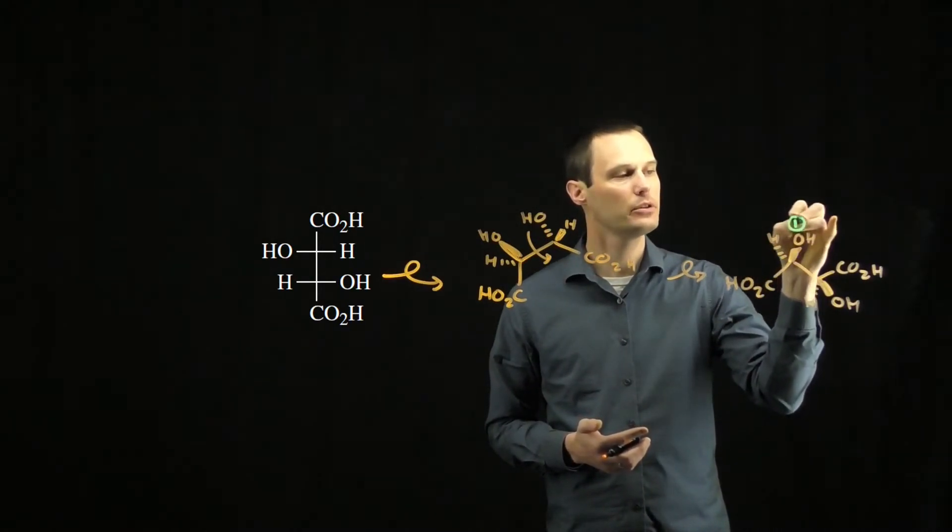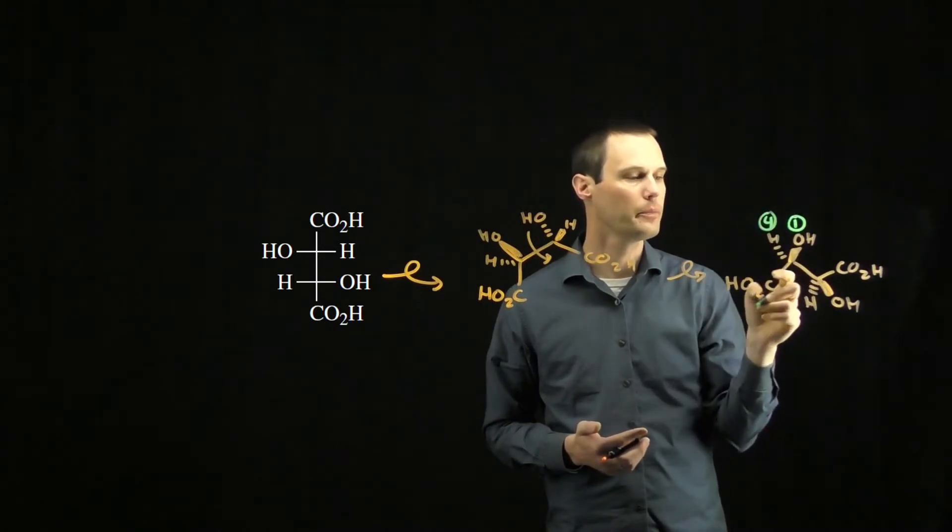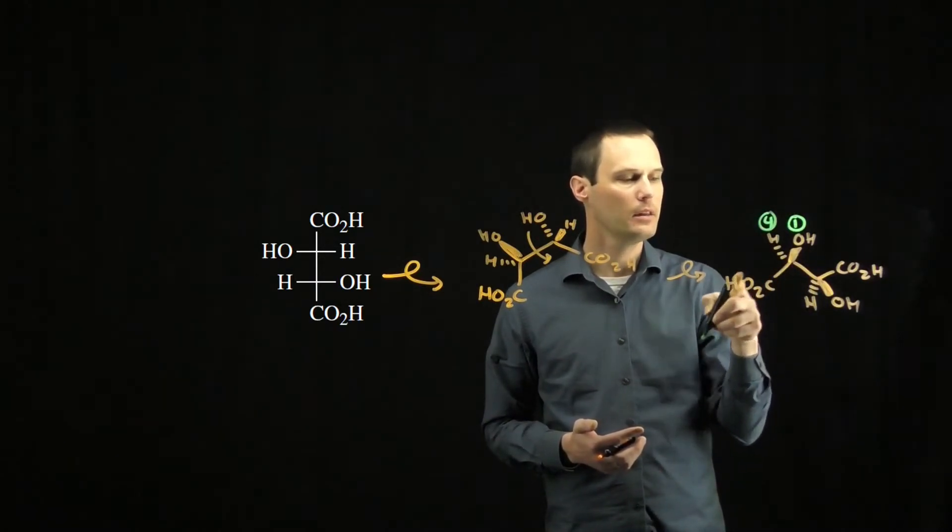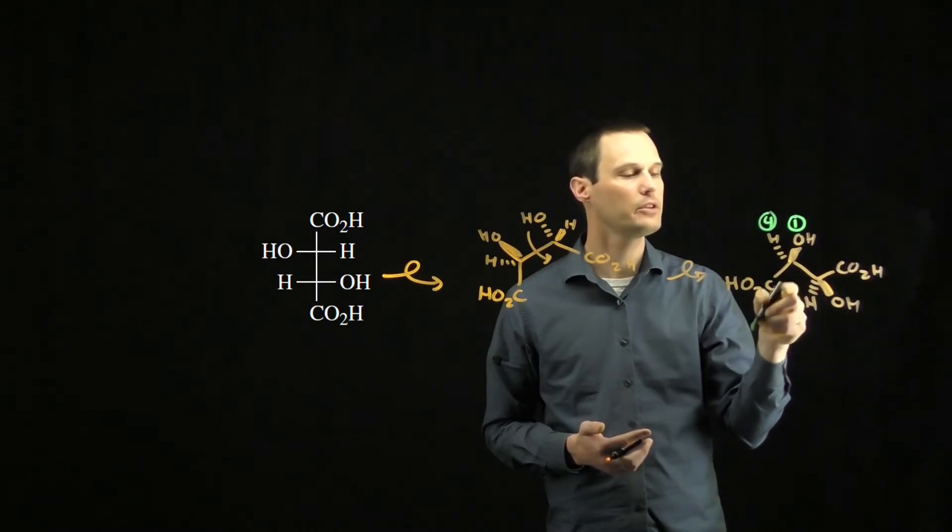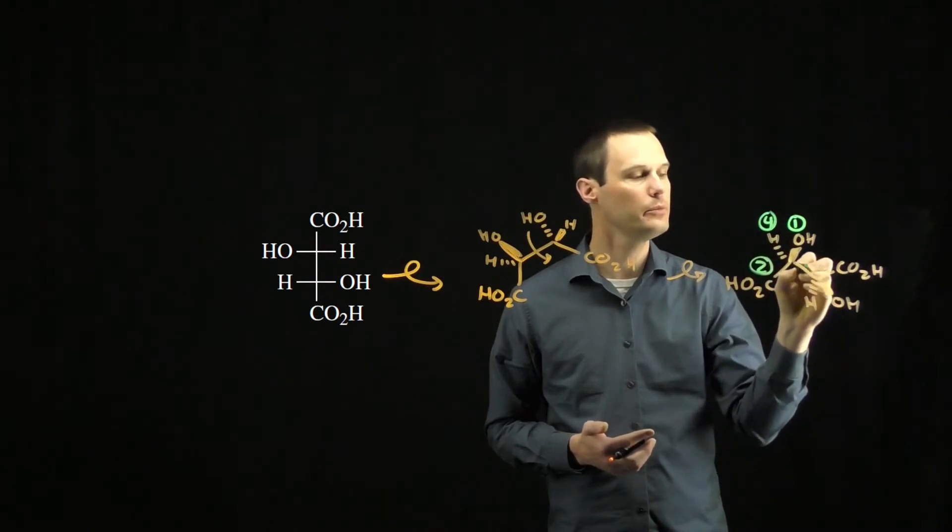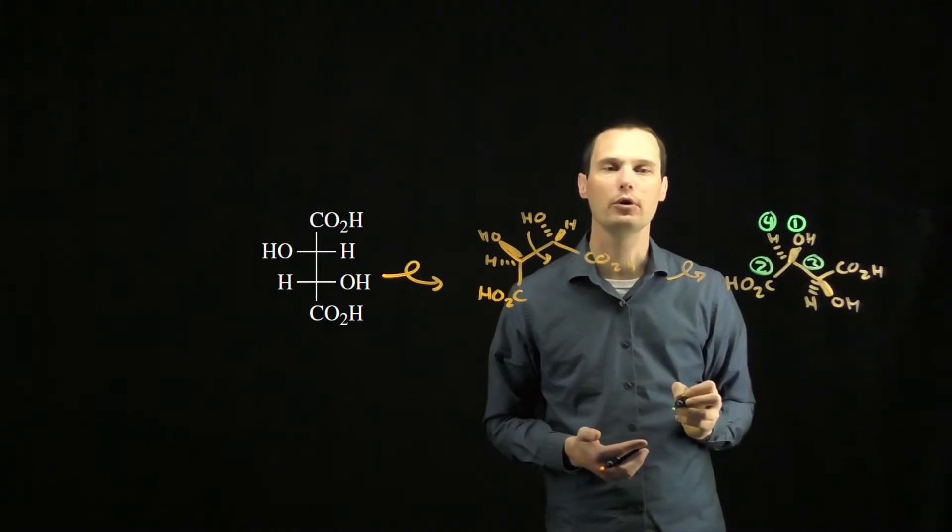For this one, the oxygen group is priority one. The hydrogen group is priority four. These two carbons tie. This carbon is bonded to oxygen three times. This one is bonded to carbon, oxygen, and hydrogen. That makes the carboxylic acid group priority two and the other carbon in the molecule priority three.